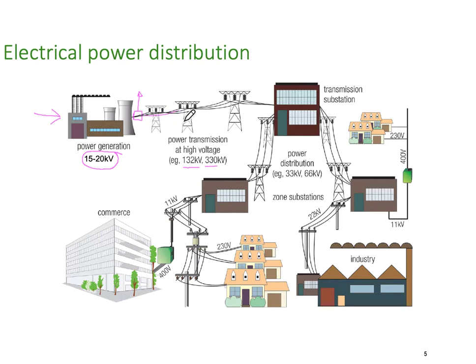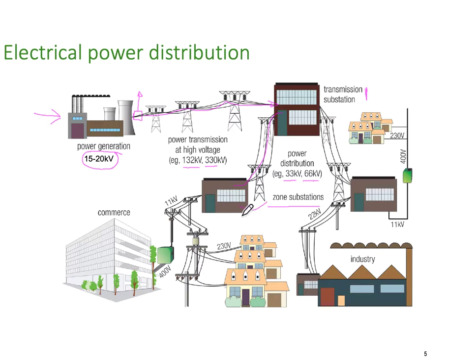We transmit through those large towers you see dotted across the landscape to large distribution substations. You can tell the distribution substation by the insulator columns — stacks of big porcelain plates that are often 5, 6, or 7 metres tall. You often see big aluminium corona rings to help with very high voltage discharge. From there, we distribute to zone substations, often at 33 or 66 kV, and sometimes even 132 kV, where voltage is again reduced through transformers.